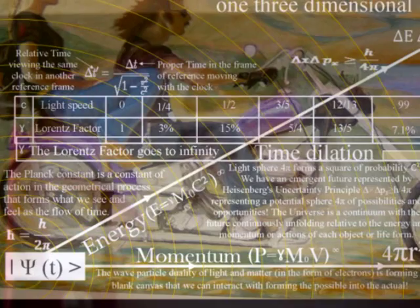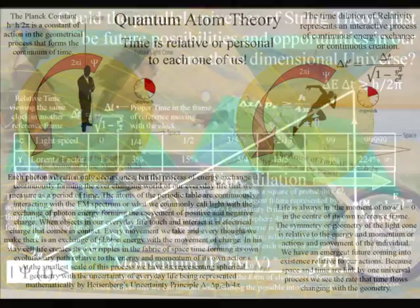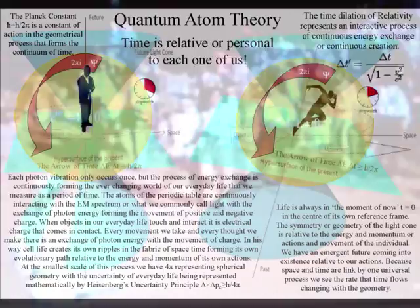This theory takes the dynamic interactive process of the general theory of relativity and extends it to our everyday life, explaining a universe that is continuously coming into existence relative to the energy and momentum of our own actions. Every individual is a part of this interactive process that forms the uncertainty and probability that is needed for the great game of life.